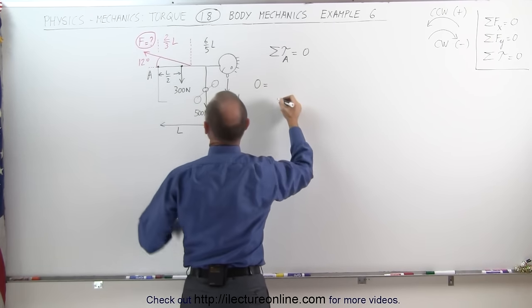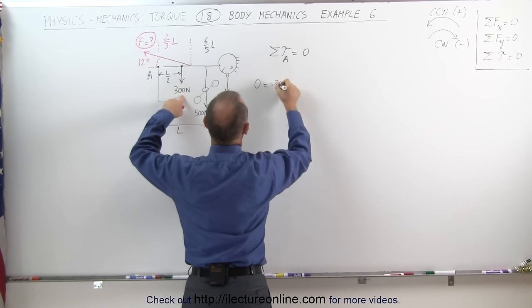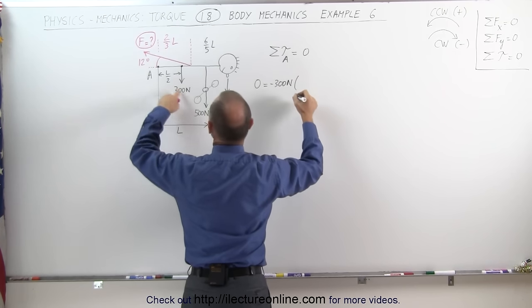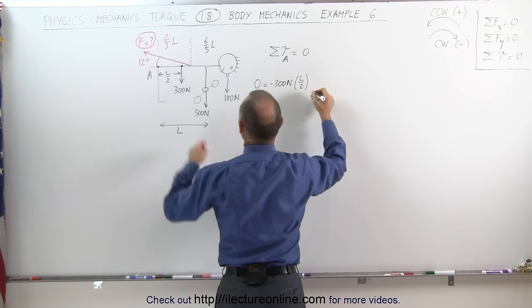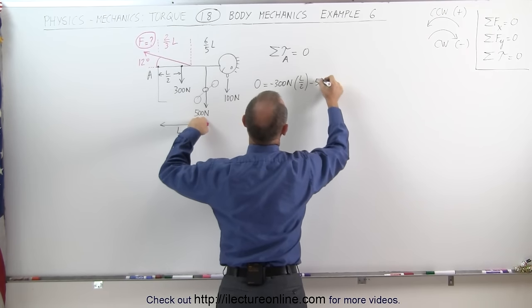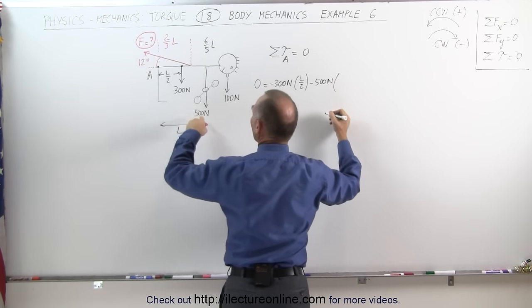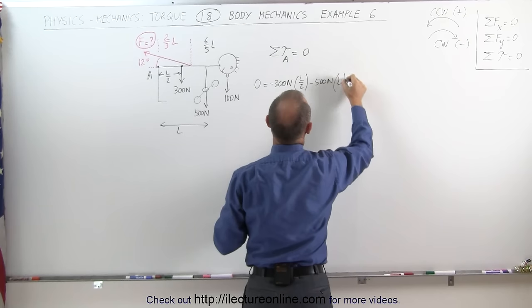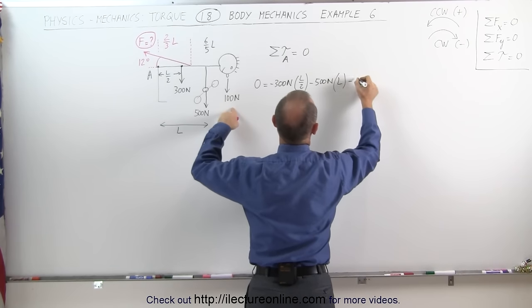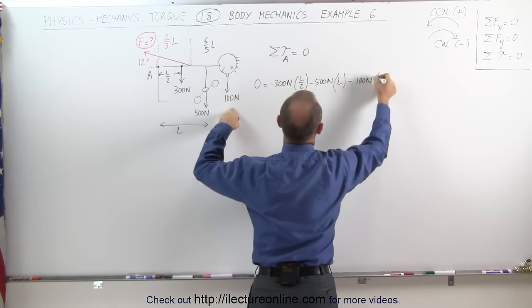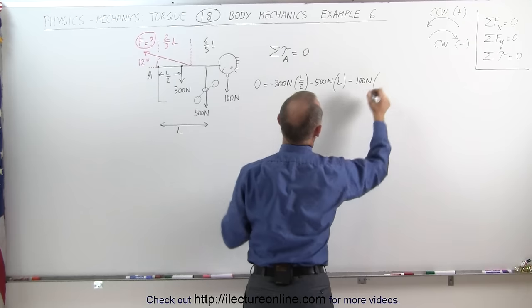We have zero equals negative 300 newtons times the distance of L over 2 minus 500 newtons times the distance of 6 over 5L.